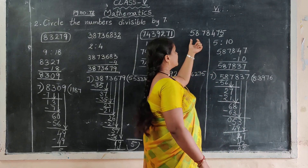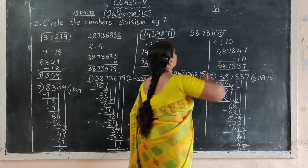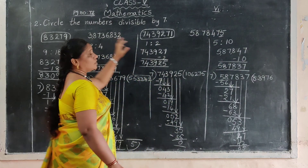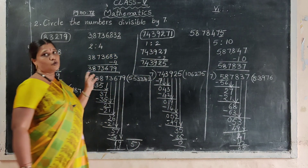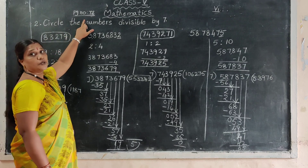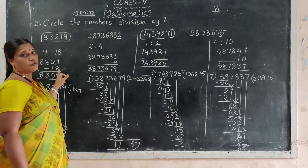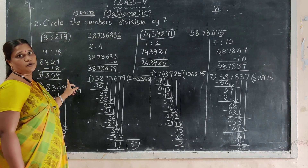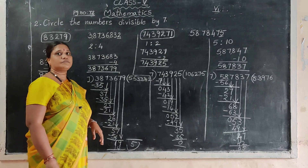So this is not divisible by 7. In these numbers, only 2 numbers are divisible by 7. Next row is homework — page number 72, second row, homework. Do it. Thank you, children. Amen.